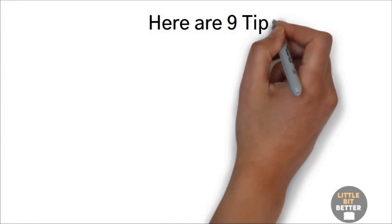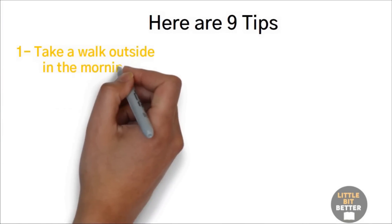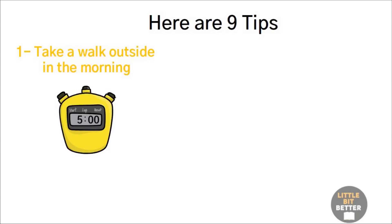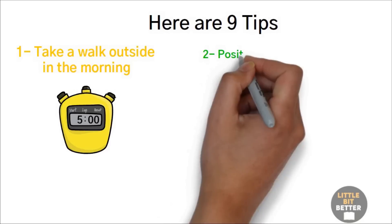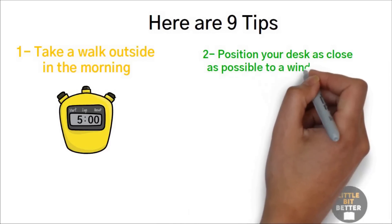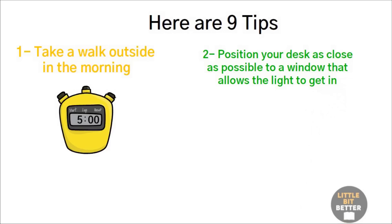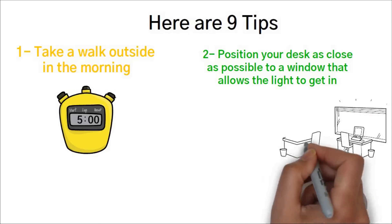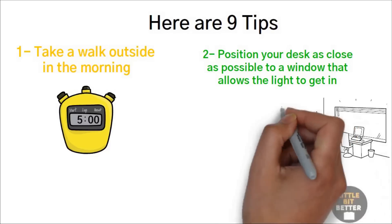One, take a walk outside in the morning. Five minutes is enough to set your clock correctly. Two, position your desk as close as possible to a window that allows the light to get in. Do the same for your employees if you own a company. They'll feel better at work if they're near daylight.